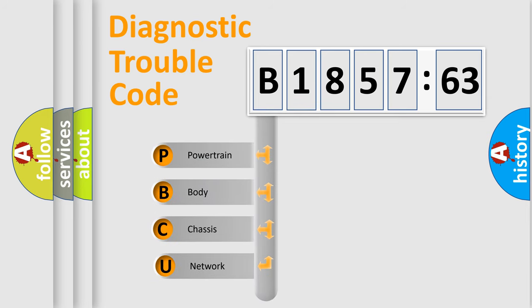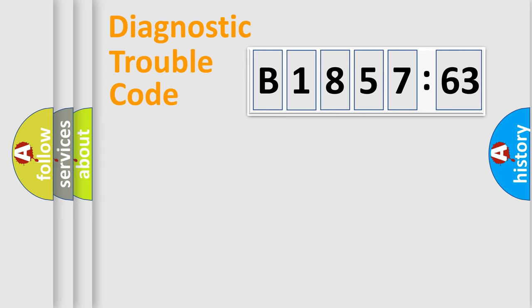First, let's look at the history of diagnostic fault code composition according to the OBD2 protocol, which is unified for all automakers since 2000. We divide the electric system of automobile into four basic units.